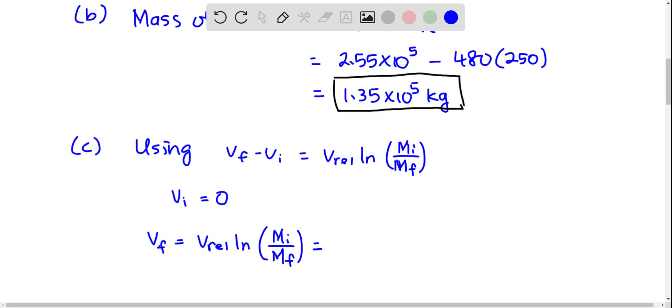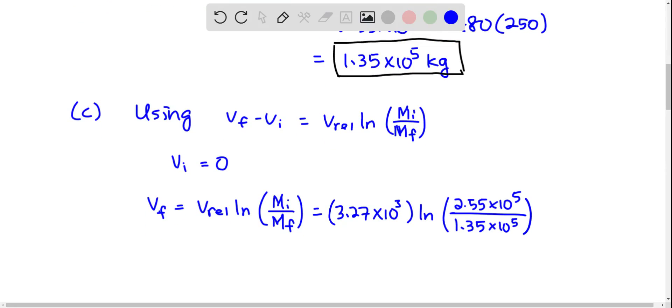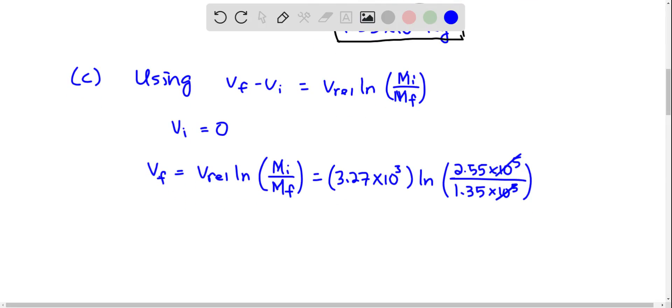So we have 3.27 times 10 to the 3 times natural log of 2.55 times 10 to the 5 divided by 1.35 times 10 to the 5. So 2.55 times 10 to the 5 is the initial mass and 1.35 times 10 to the 5 is the final mass. So you calculate this thing, you get 2.080 meters per second.